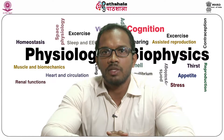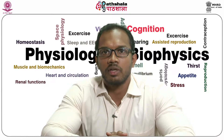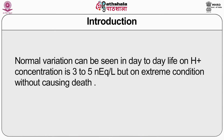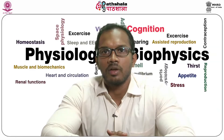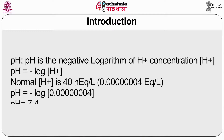The kidney plays an essential role in maintaining the balance of hydrogen ion concentration, which is kept within a very narrow limit. This shows the need for multiple and dynamic regulatory measures. Normal variation in day-to-day life is 3 to 5 nanoequivalents per litre, and on extreme conditions without causing death it can vary up to 10 nanoequivalents. pH is basically the negative logarithm of hydrogen ion concentration. Normally it is 40 nanoequivalents per litre, so the pH of the body is 7.4.